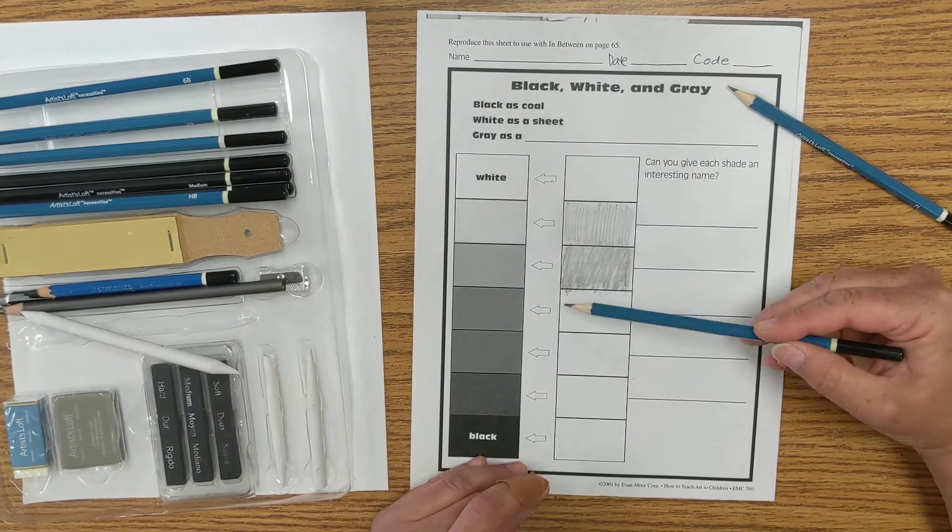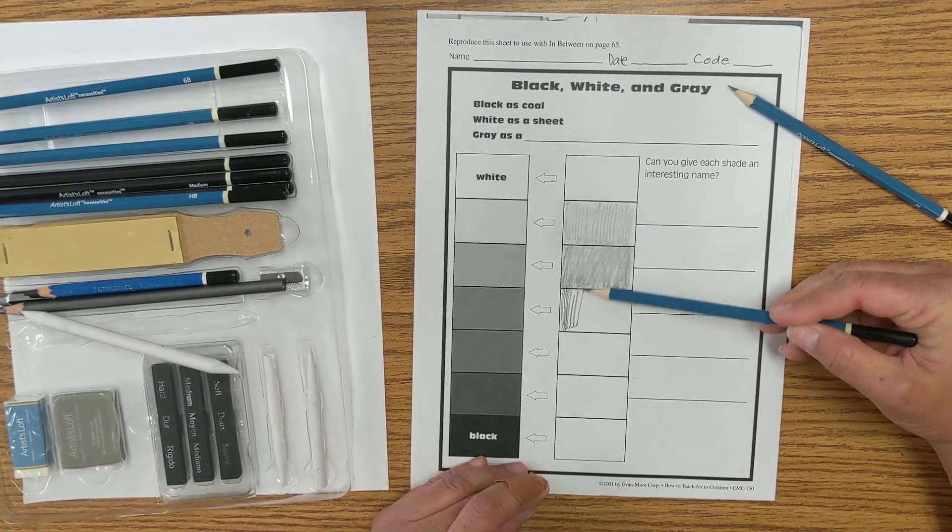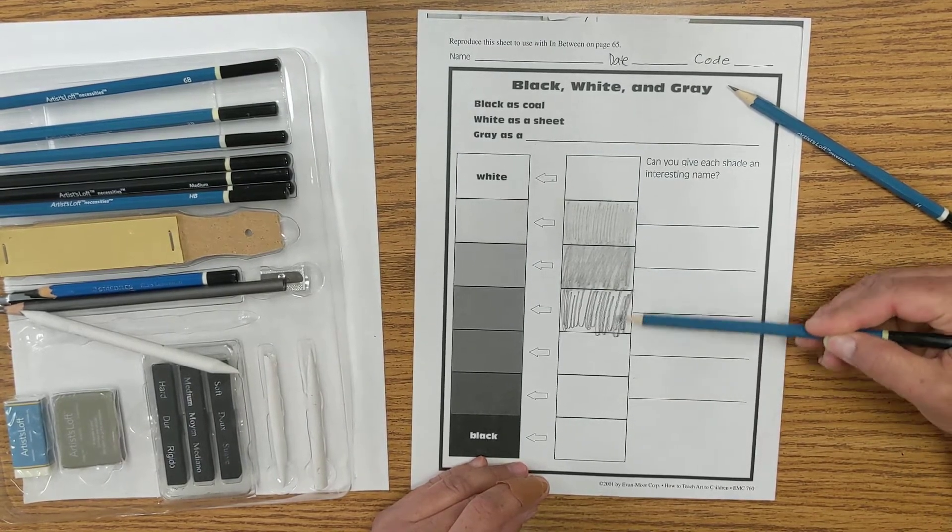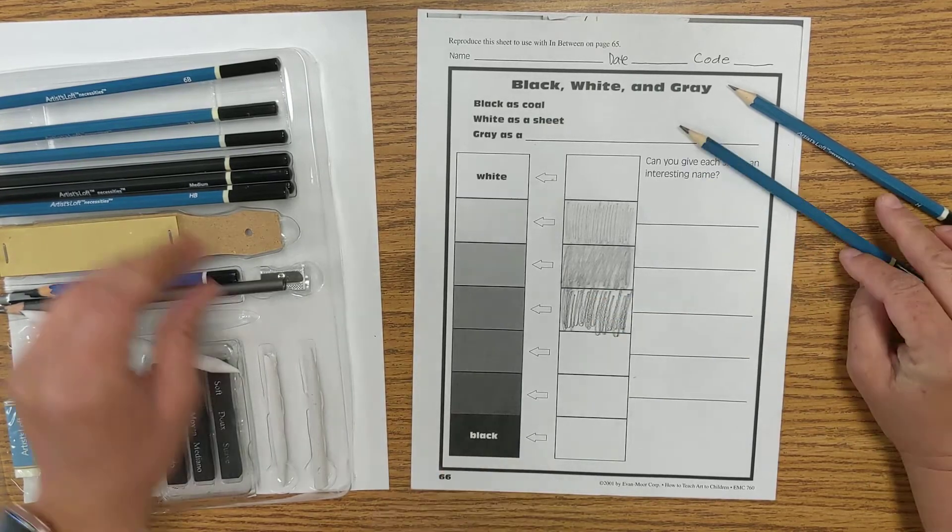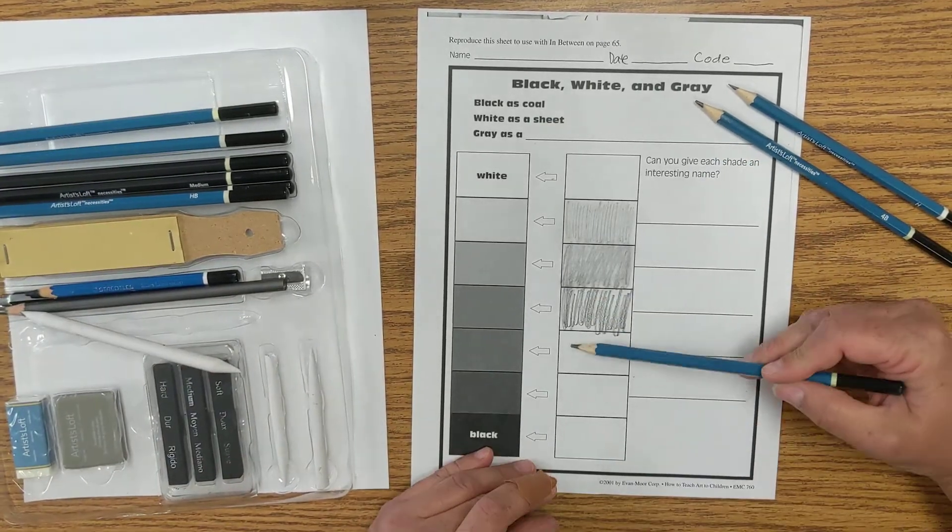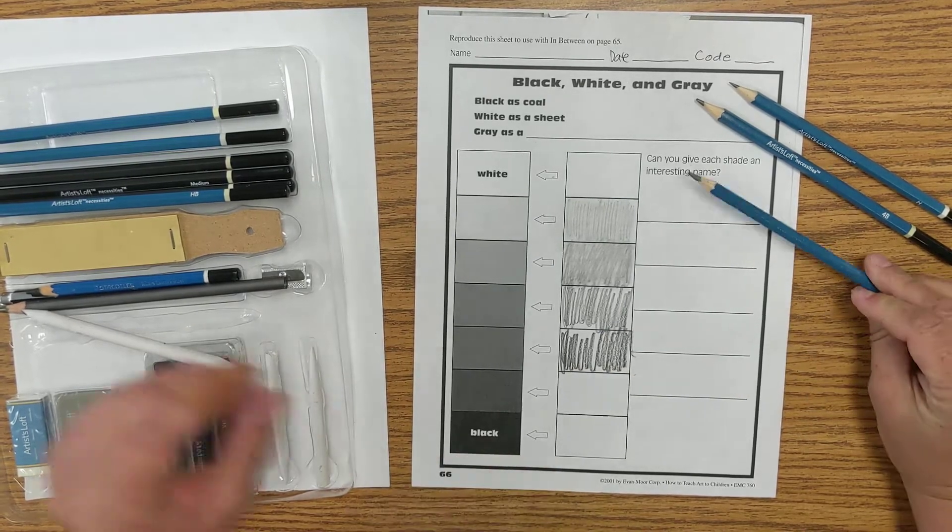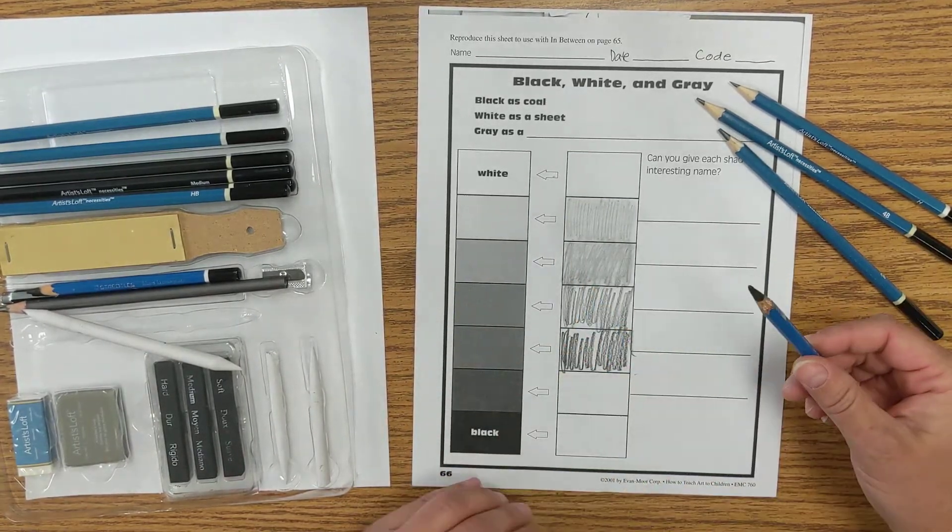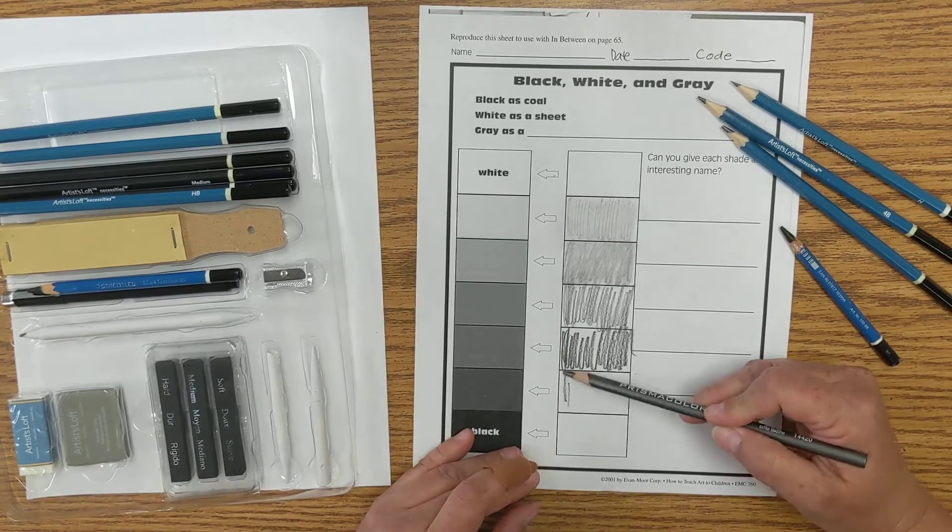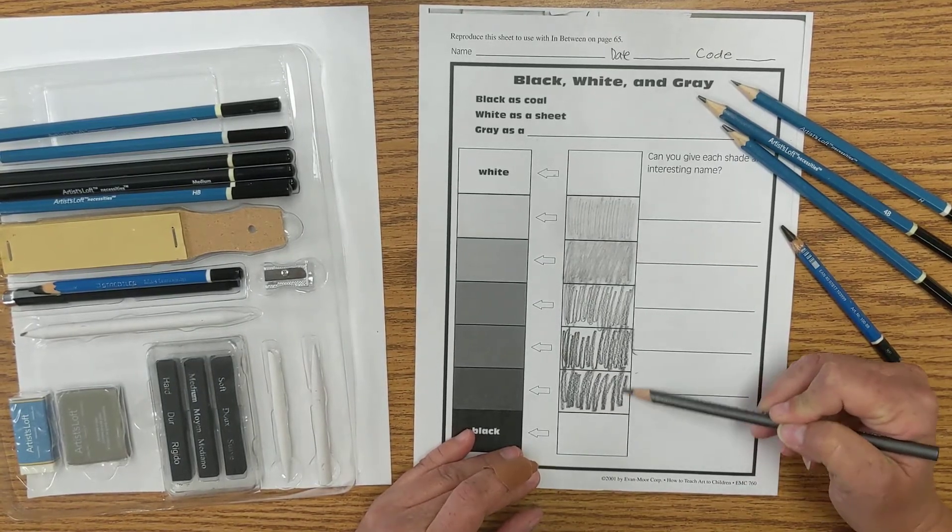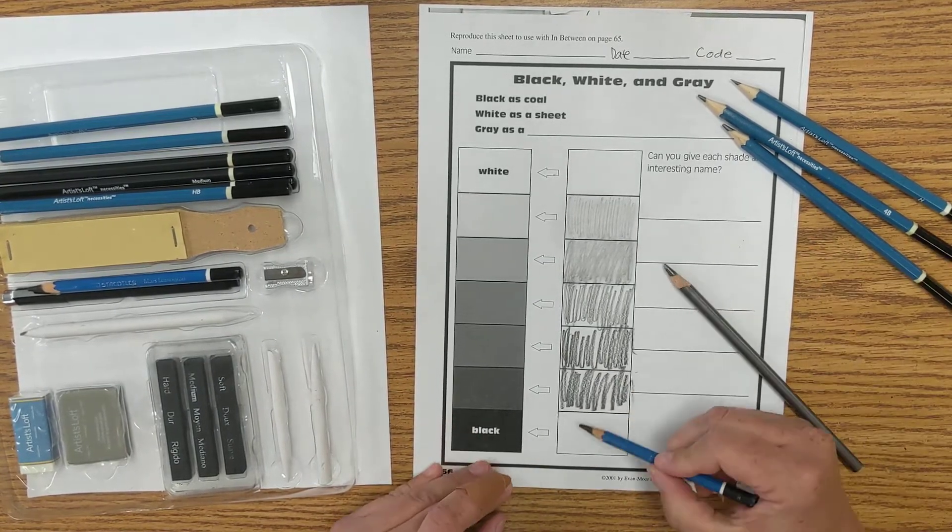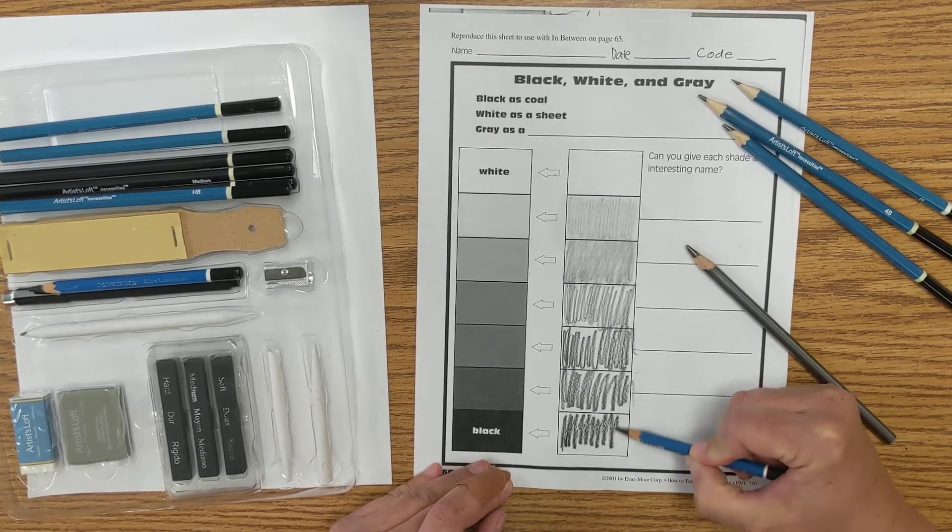Here, this is an H, 4B, there's a 6B, here's the ebony, and here's the 8B, and that's like charcoal.